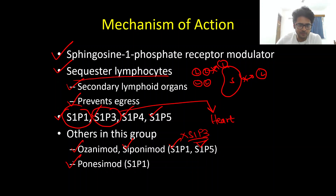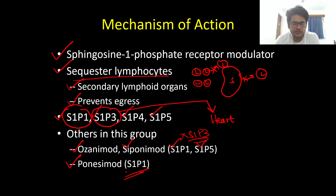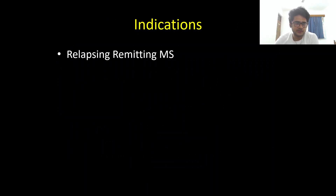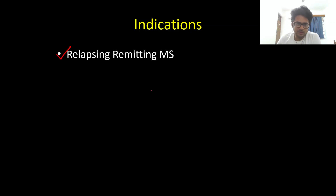Ponesimod is highly selective — it acts only on the S1P1 receptor. Coming to the indications, Fingolimod is approved for relapsing-remitting MS. It is the first oral drug approved for multiple sclerosis.